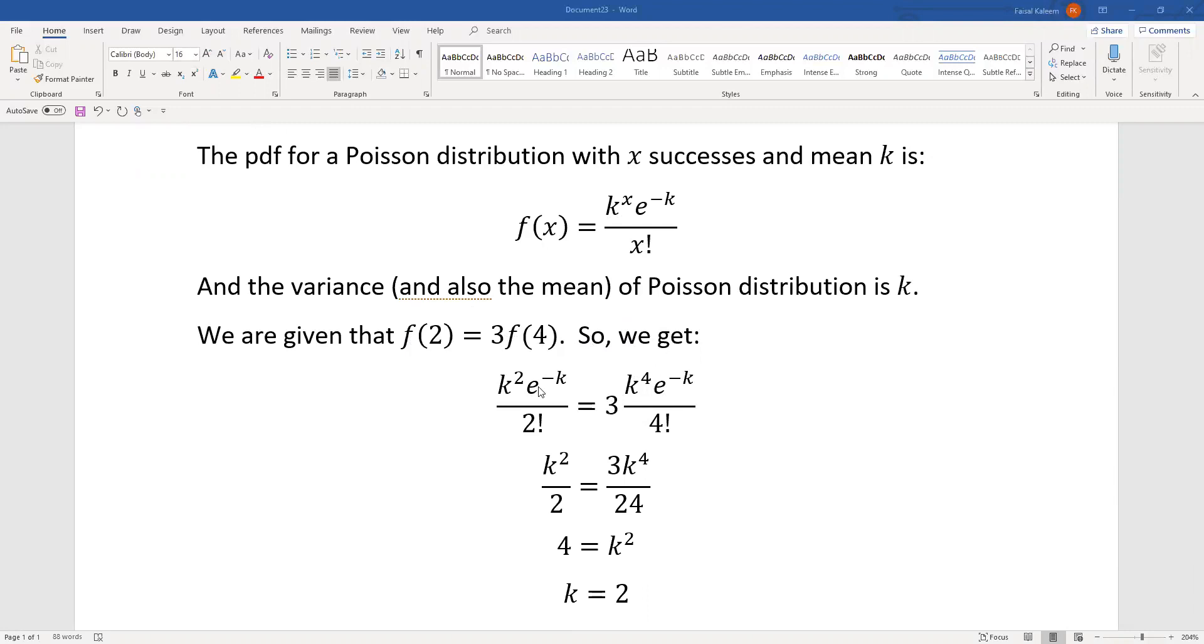The e^(-k) cancels out and we get k^2/2! = k^2/2 equals 3 * k^4/4! = 3k^4/24.